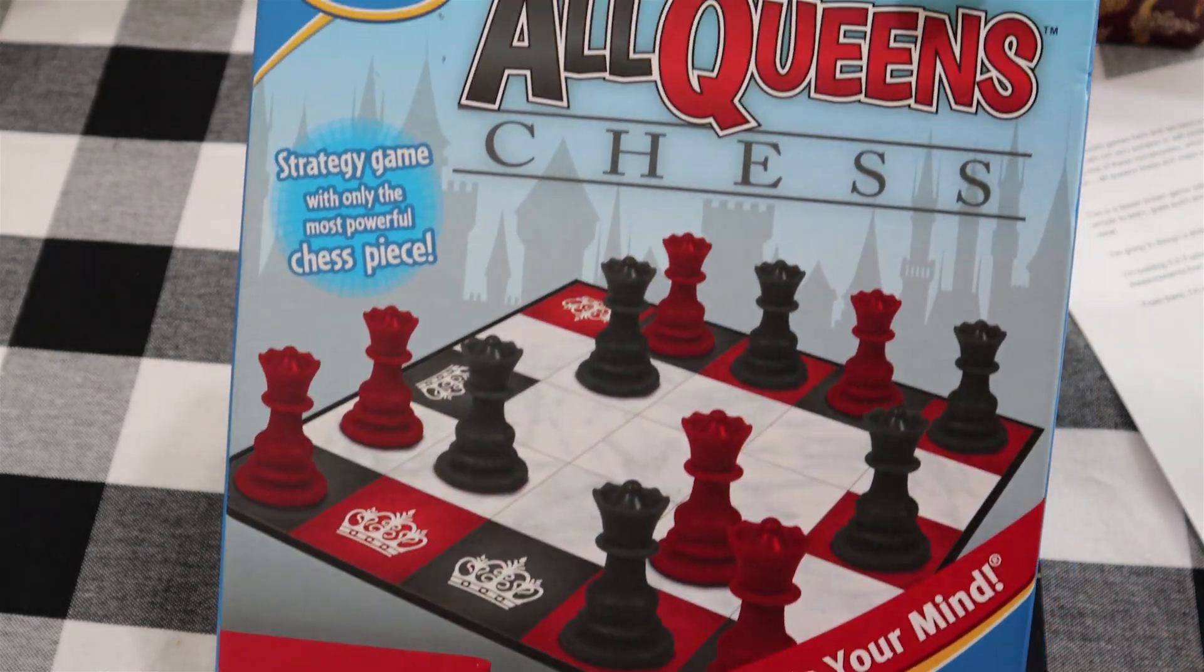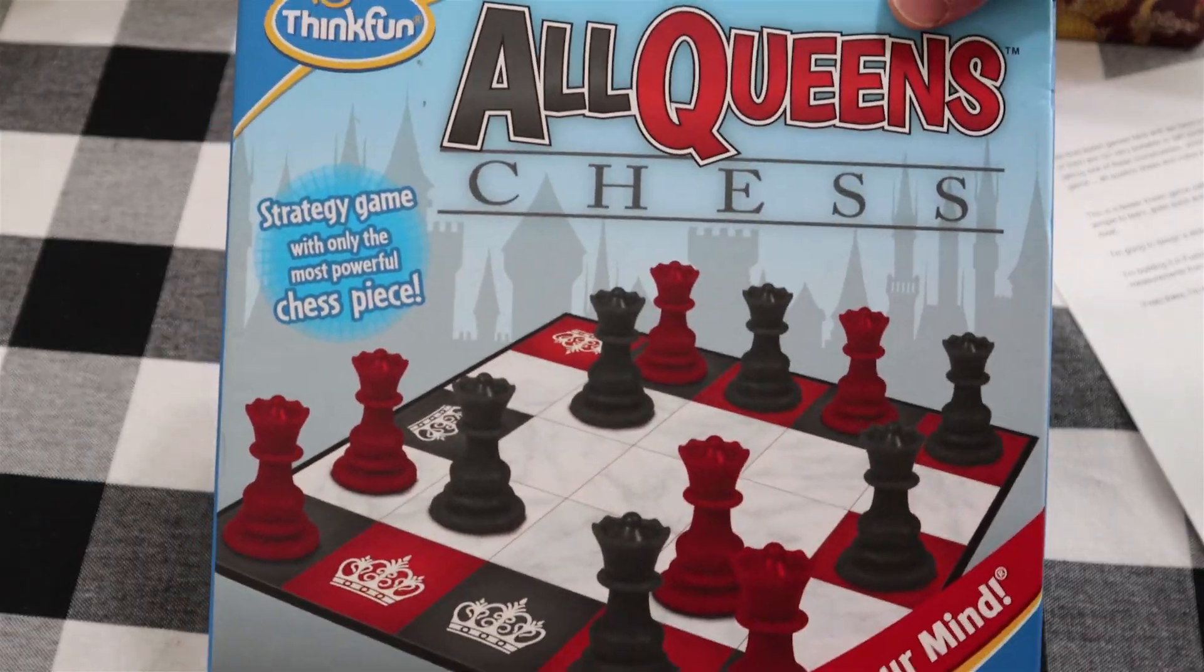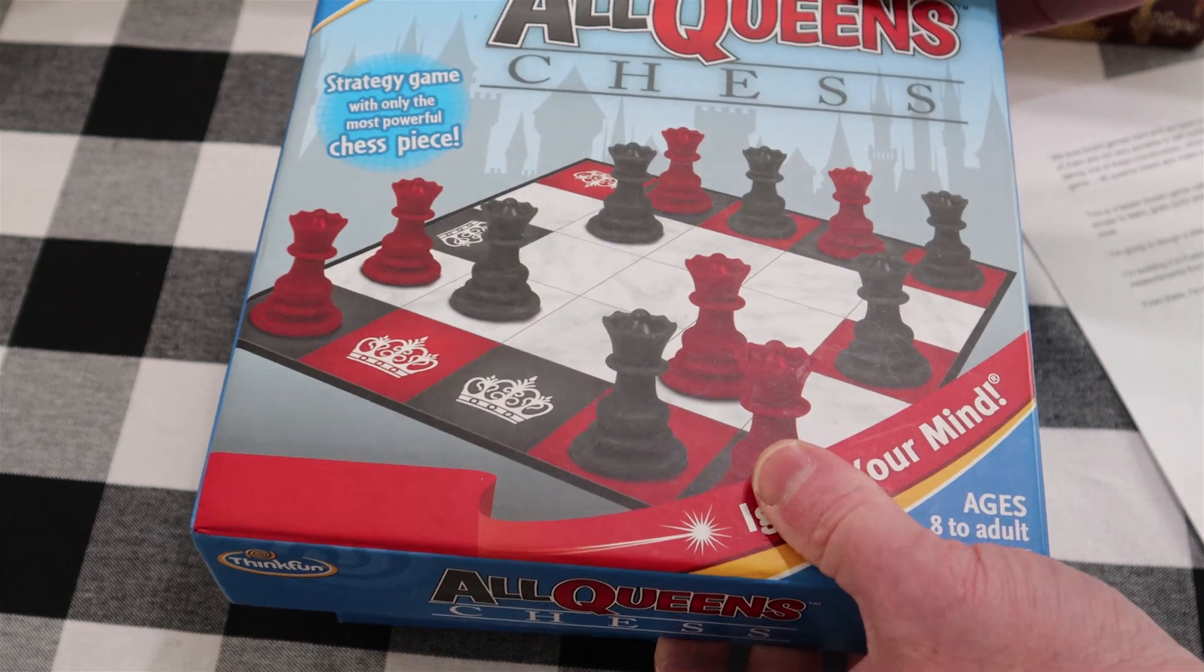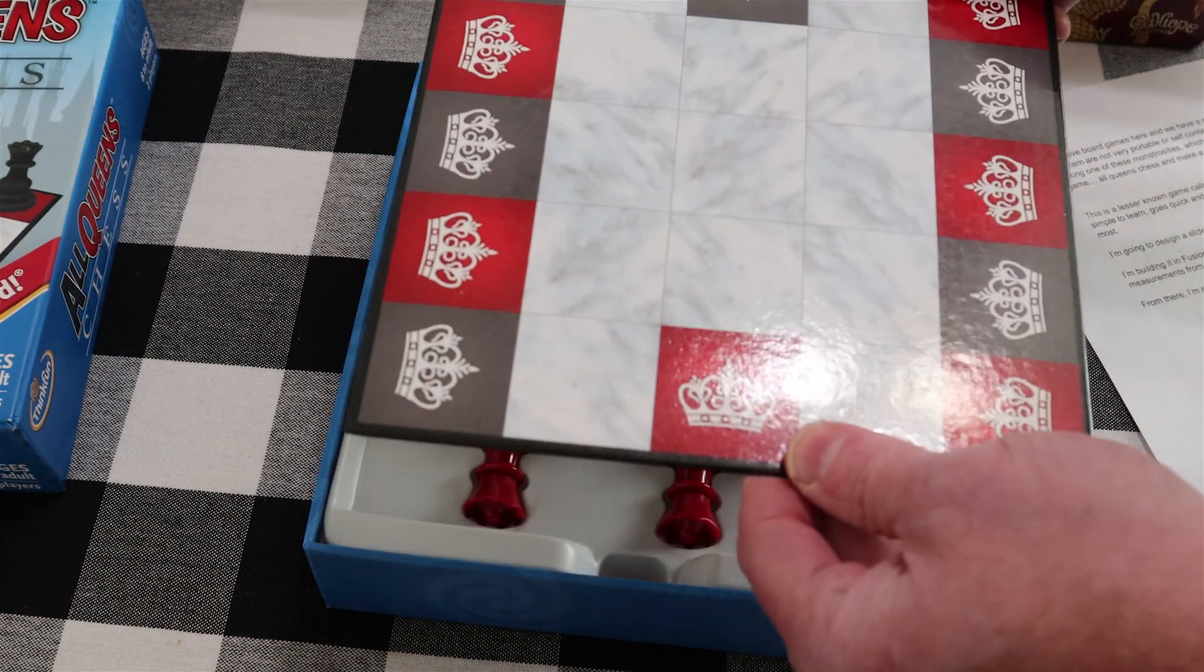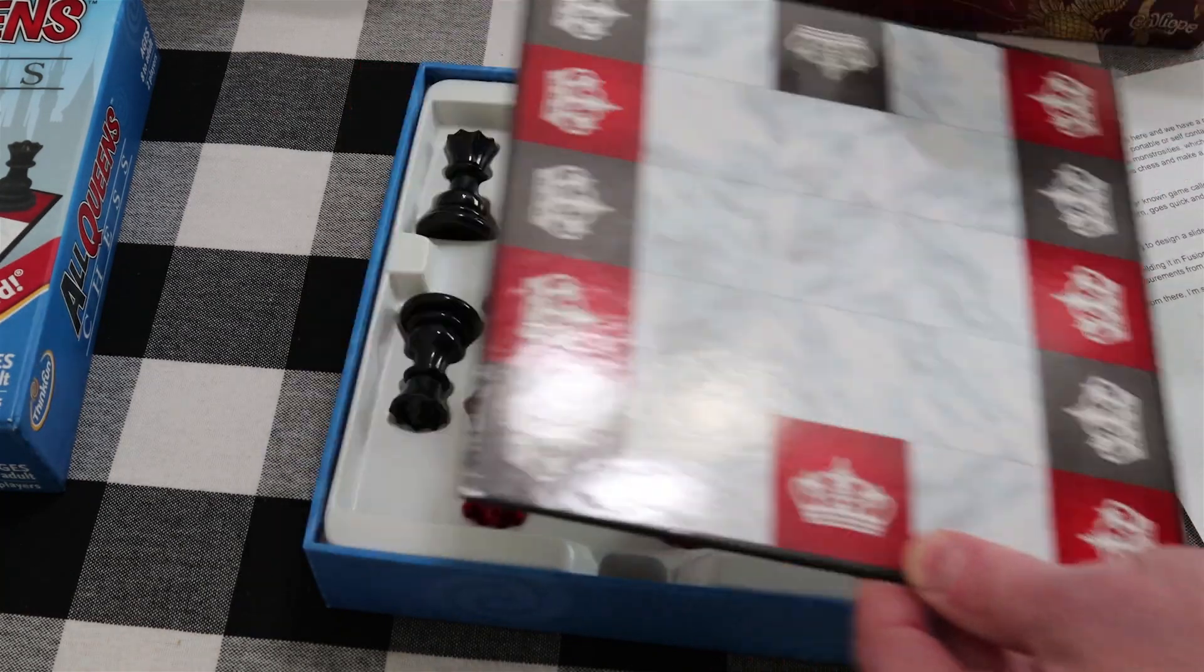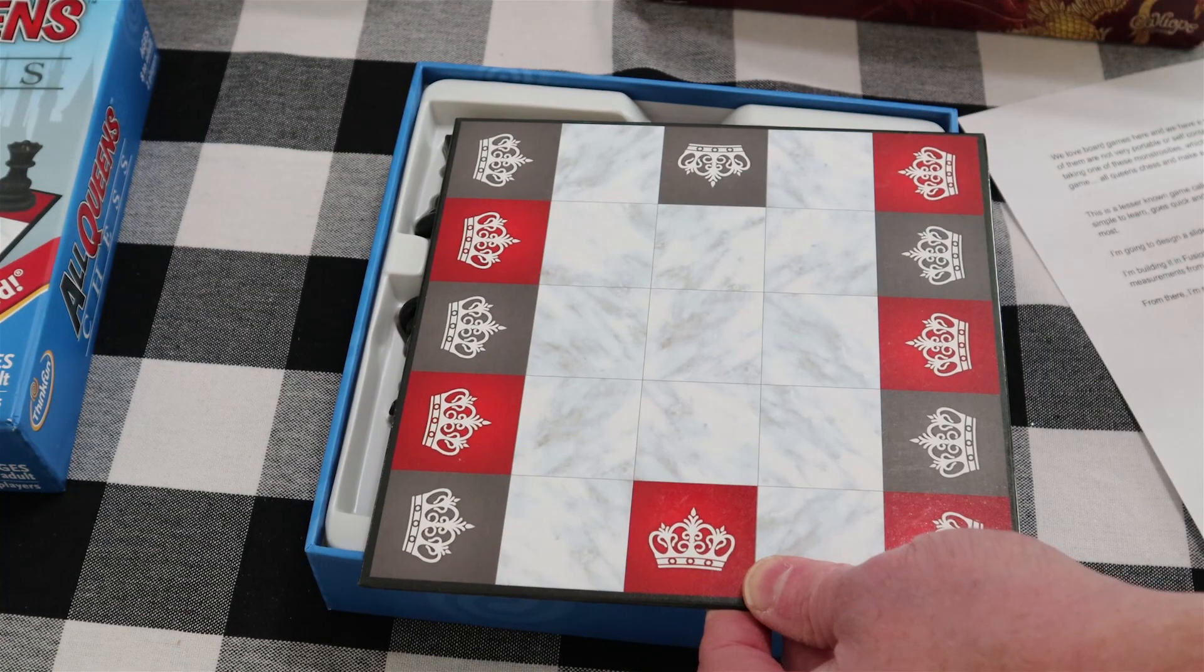Today I'm going to take this lesser-known game called All Queens Chess, which is kind of a hybrid between chess and Connect 4, and I'm going to create a self-contained unit that has the box, the board, and the pieces all together.